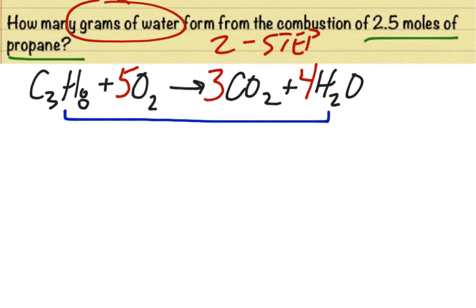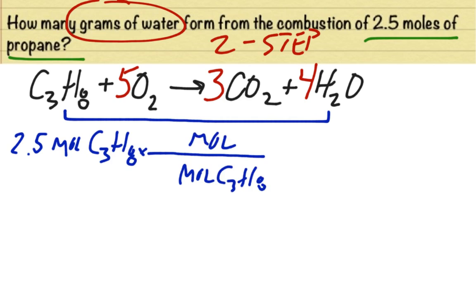And we're going to start this problem out in the same way that we started out our other problem. We're going to start out with 2.5 moles of our given substance, C3H8. Now, in order to get to grams of water, we first have to go to moles of water. So we have to get rid of the moles of what we have here by putting moles of C3H8 on bottom and moles of water on the top.